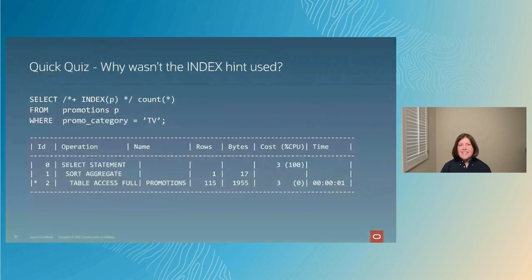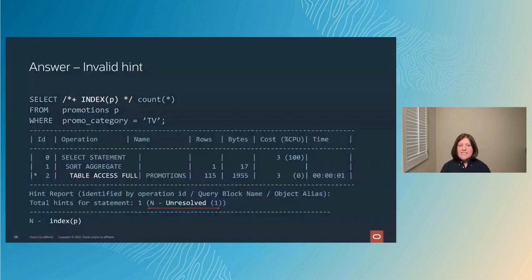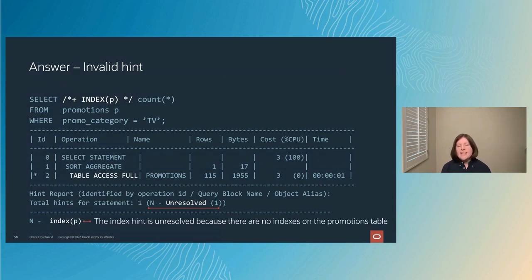The second case: I'm using the INDEX hint correctly with the right alias for the promotions table, but I still get a full table scan instead of an index access. Looking at the hint report, it shows the hint is unresolved. Why? Because there are no indexes created on the promotions table — so the hint is not applicable.